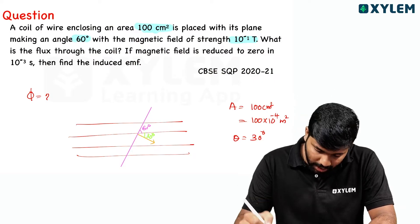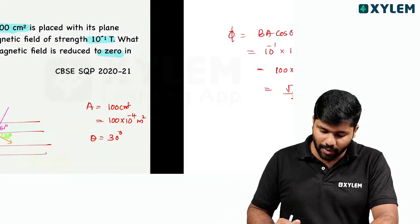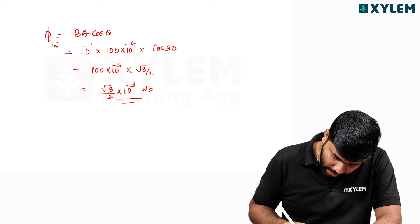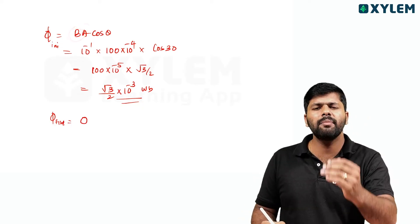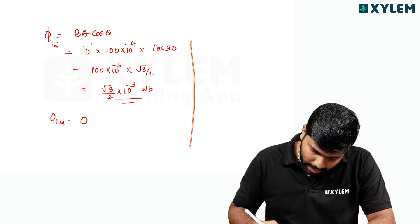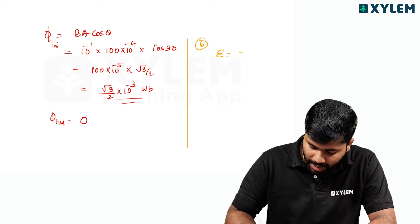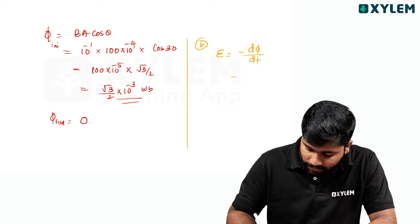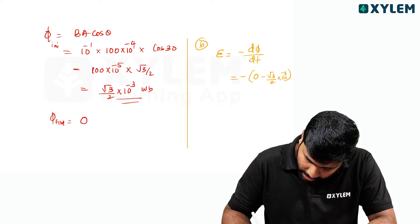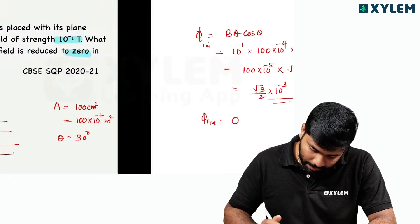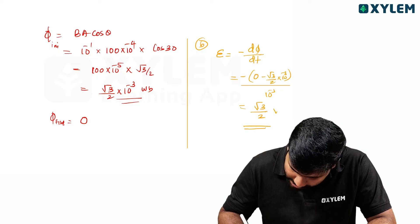Part B: if the magnetic field is reduced to zero in 10 raised to minus 3 seconds, find the induced EMF. Since B becomes zero, the final flux is zero. Induced EMF equals minus dΦ/dt = minus of (0 minus root3/2 into 10⁻³) divided by 10 raised to minus 3. So the answer is root 3 by 2 volts.